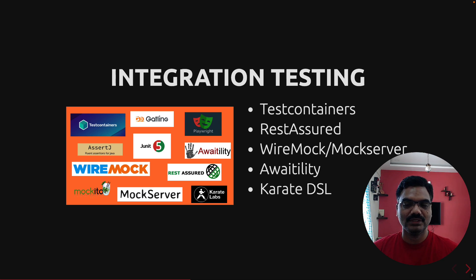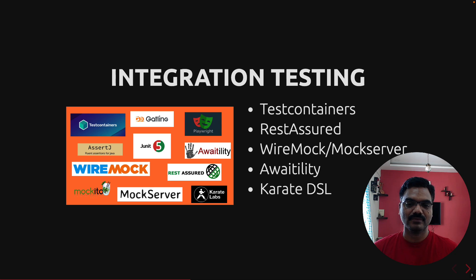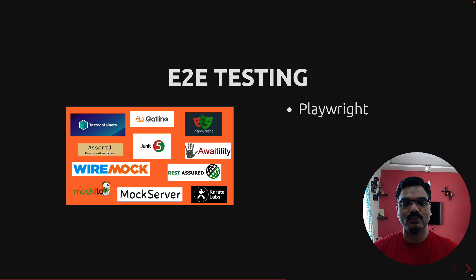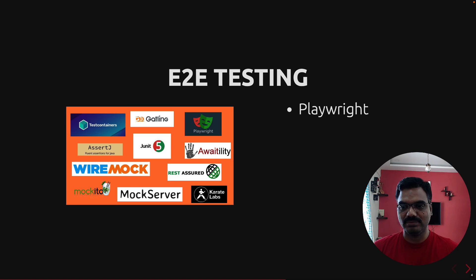There is also an interesting library called Karate DSL, which builds on top of Cucumber, which we can use to test our APIs. Then we will learn how we can write end-to-end tests using Playwright. Usually people use Selenium, Selenide, Cypress, or Playwright for writing end-to-end tests, but we are going to focus on using Playwright.